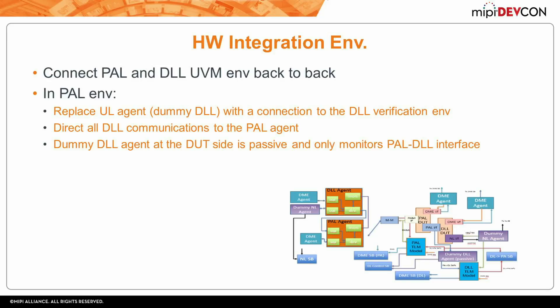When the physical adapter and the data link were ready for integration, we integrated the two UVM environments — the UVM environment for the PAL and the UVM environment for the data link — as is, with a small replacement. In the PAL UVM environment, we replaced the dummy DLL agent, which was just a quick model for the data link, with the real connection to the full data link agent. So the PAL UVM environment and the data link UVM environment together act as a peer device to the PAL DUT and the data link DUT.